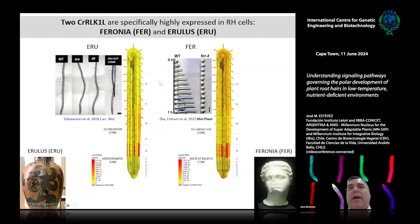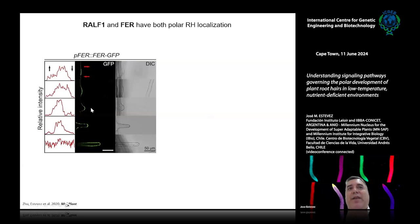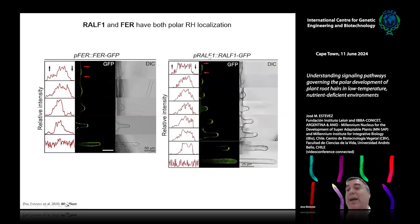Together with other groups, we identified two receptors important in root hair cells: ERULUS and FERONIA. Both are highly expressed in root hair cells and are important for triggering and controlling the cell elongation process. Feronia is expressed in root hairs — when tagged with GFP, you can see a maximum of expression when root hair starts to polarize, then the receptor is distributed over the entire cell surface. The ligand is called RALF — Rapid Alkalinization Factor 1 — one of the most well-studied, and its pattern mirrors that of Feronia, which makes sense as it is the ligand of the receptor.